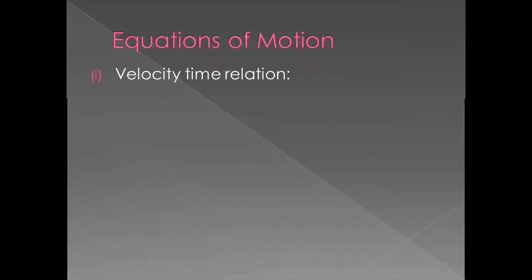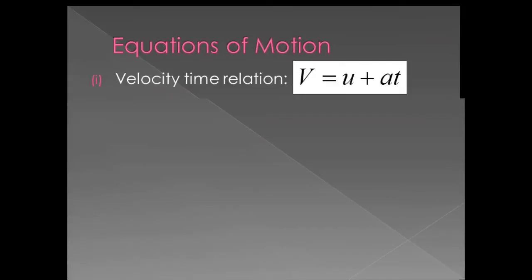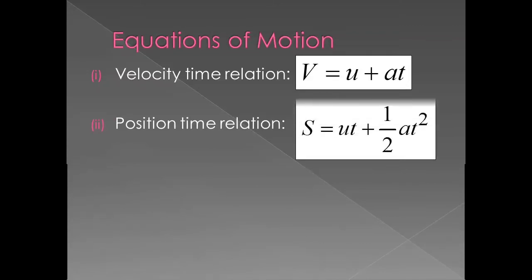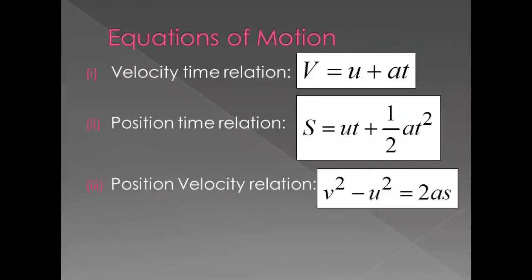Equations of motion. First equation is the velocity-time relation: v = u + at. Second equation is the position-time relation: s = ut + ½at². Third equation is the position-velocity relation: v² - u² = 2as. Here u and v are velocities of the moving body, a is acceleration, t is time taken, and s is the distance covered in the given time interval.